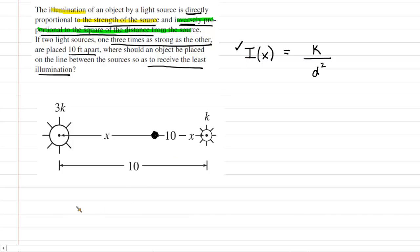Now what we're going to do is come up with an illumination equation representing the total. Remember, there are two light sources. So we might say that the total illumination is going to equal the illumination supplied by the 3K source plus the illumination supplied by the K source. Now we're going to expand each of the two terms on the right-hand side.